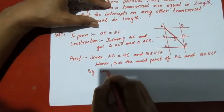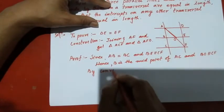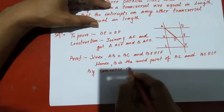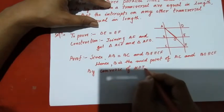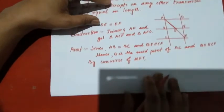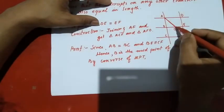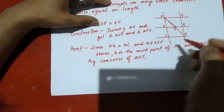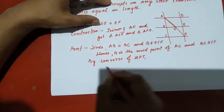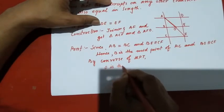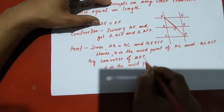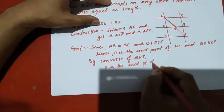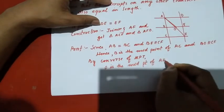By the converse of the midpoint theorem: since B is the midpoint of AC and BE is parallel to CF, we conclude that O is the midpoint of EF.